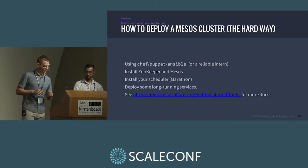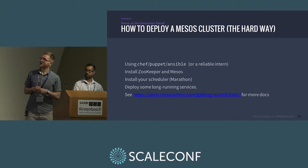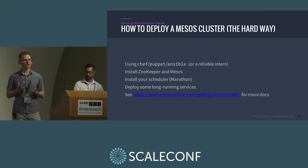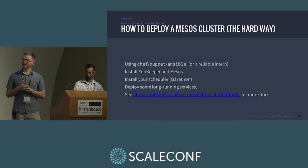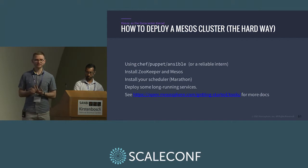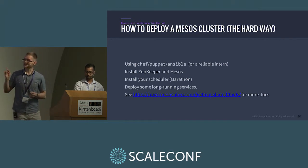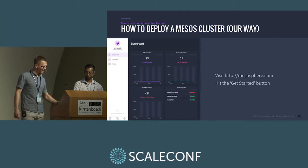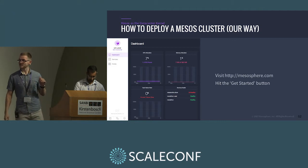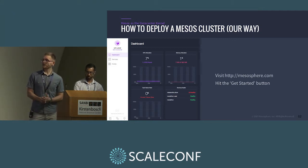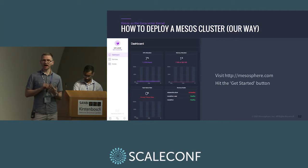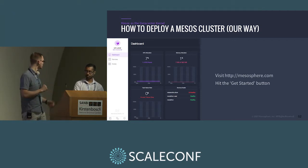Putting a Mesos cluster together: you need a Chef, Puppet, or similar configuration template. You install Zookeeper, which is pretty much essential to Mesos, then install Mesos, install one or multiple schedulers, and deploy your services. Sounds simple but can take a while. There's excellent documentation at open.mesosphere.com. And then there's our way — DCOS, the data center operating system — where this is done for you, and packages like Cassandra, Kafka, and Spark are available to install very simply.